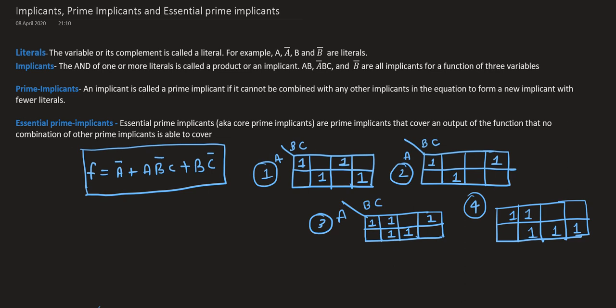I will talk about implicants, prime implicants, and essential prime implicants. First, let us look at what literals are. Literals are just the variables or the complement of a variable. For example, A, A bar, B, B bar, C, or C bar — all of these are called literals.